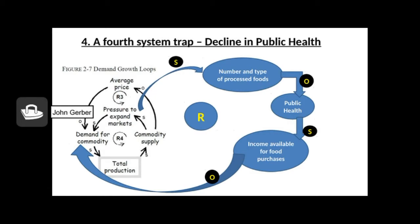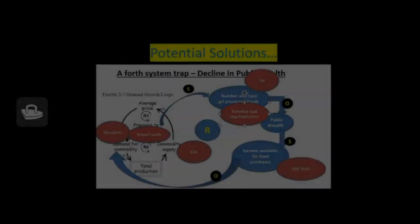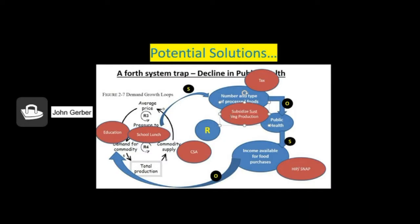Finally, we look at the fourth system trap, the decline in public health that's been caused by so many cheap processed foods. What do we do about that? Back to the systems dynamics model, what do the students propose?